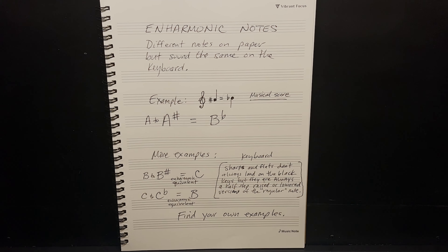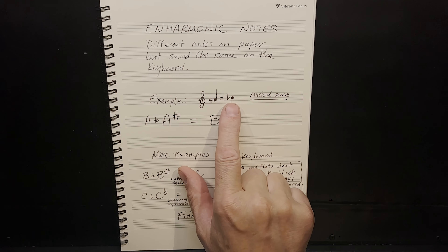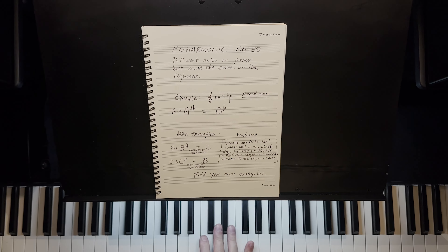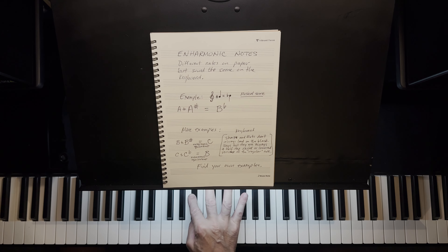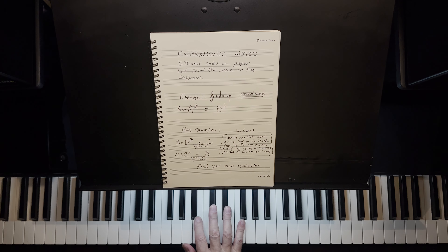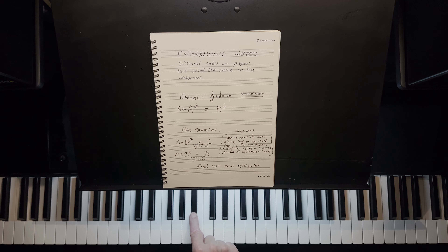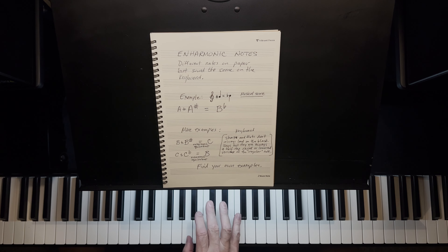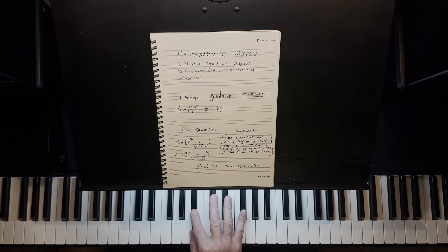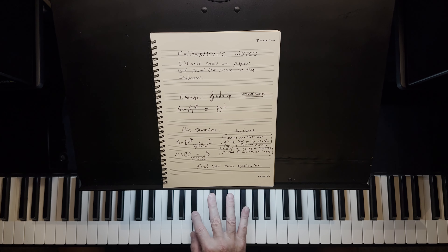For example, we have here a sharpened A and a flattened B. So if I take an A and sharpen it, I come up with this note. If I take a B and flatten it, I go down to the same note. So this note that I'm hitting three times is the enharmonic equivalent. A-sharp is the equivalent of B-flat — same note.